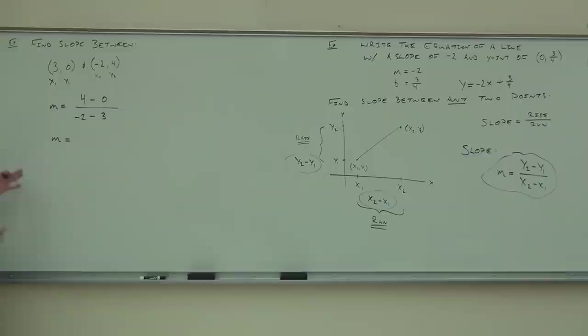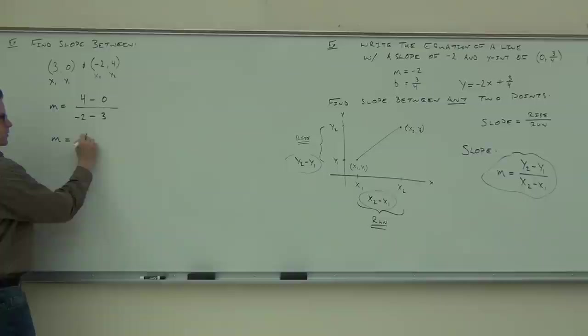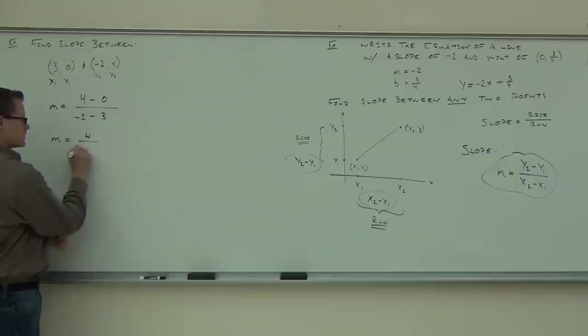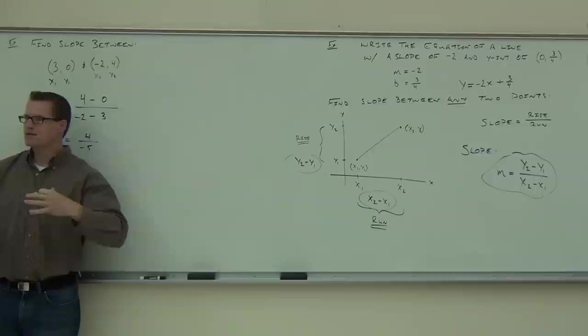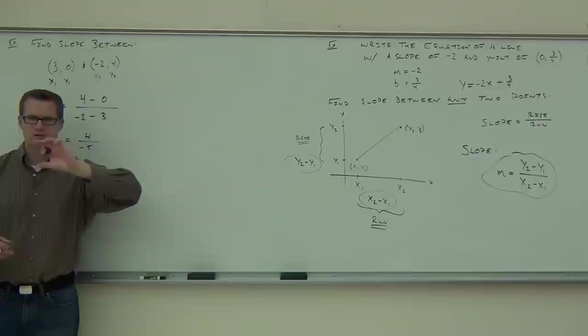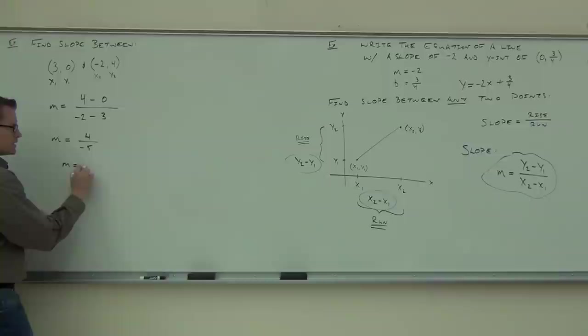So we have 4 minus 0, which gives us 4. And we have negative 2 minus 3, which gives us negative 5. So we have 4 over negative 5. I'm going to rewrite this as negative 4 over 5, because we like to identify the negative as being part of our rise — and the run is always going to the right.